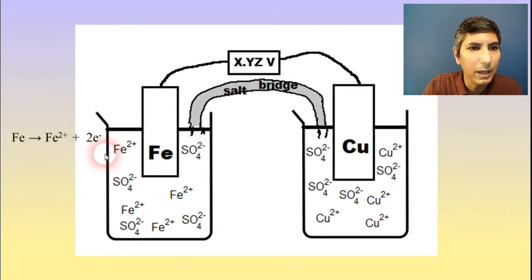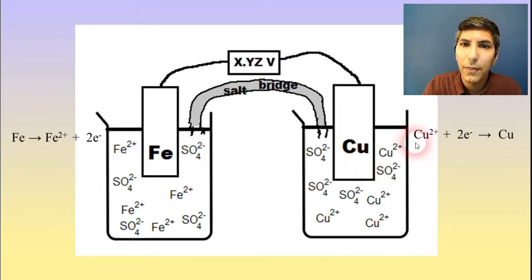Now, on the left side, where this iron is, that's where the iron half reaction is taking place. The iron is turning into iron two plus ions and two electrons. That's the same half reaction that we just wrote a minute ago. Now, on the other side, where the copper electrode is located, that's where the copper half reaction is taking place. The copper two plus gains the two electrons, making it into copper. So what we have here is basically two half reactions.